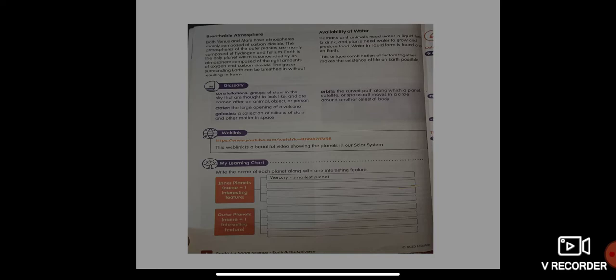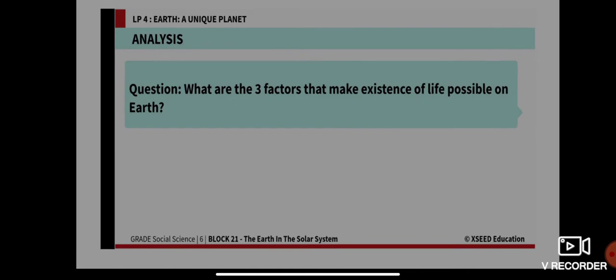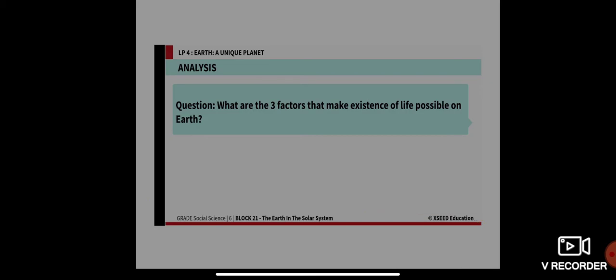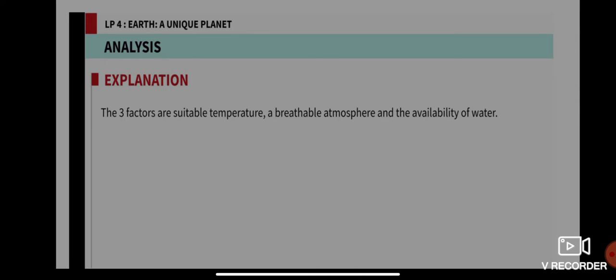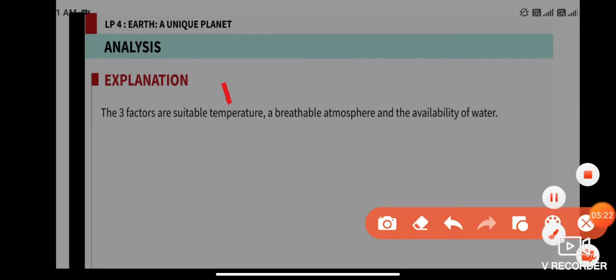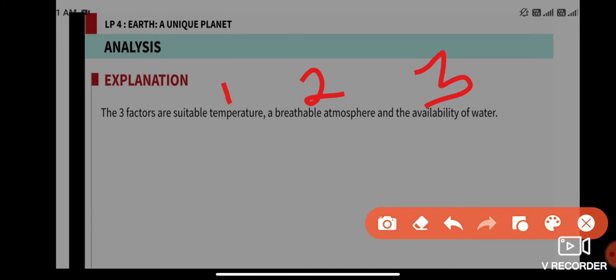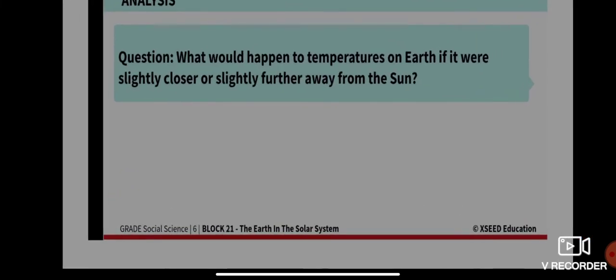Based on your reading, what are the three factors that make existence of life possible on Earth? The three factors are: one — suitable temperature; two — breathable atmosphere; and three — availability of water. These three factors make life possible on Earth.